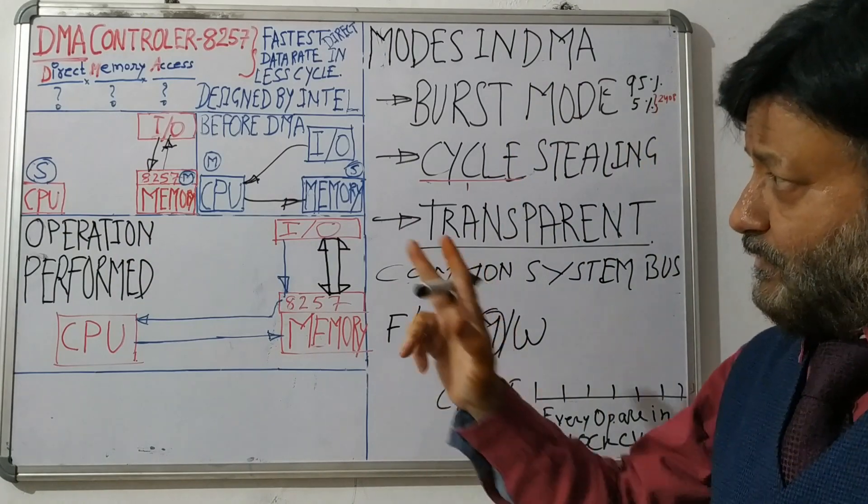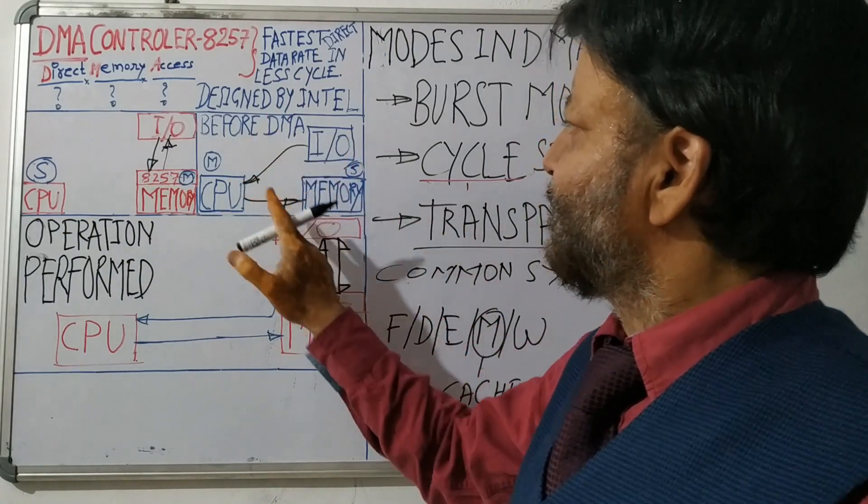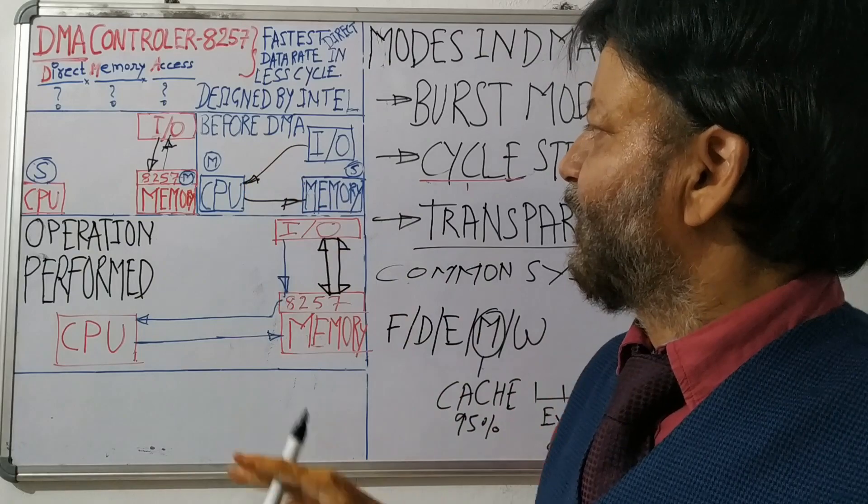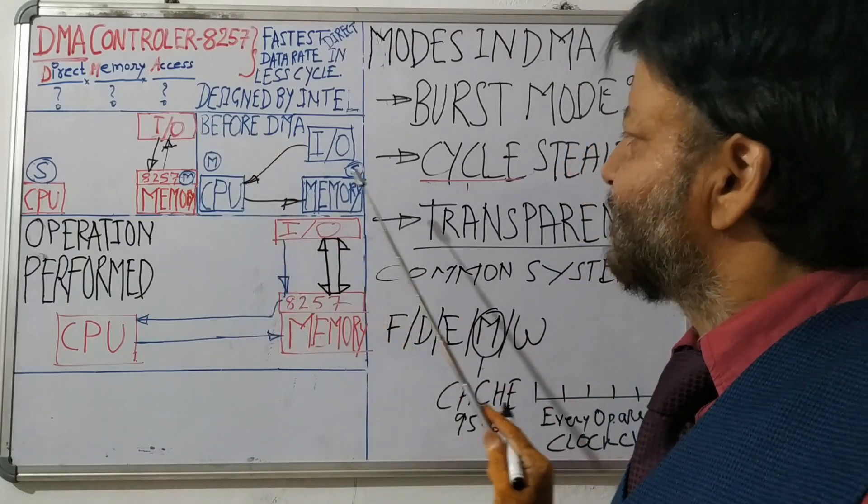So one more thing is there: CPU is master in that case, before DMA scenario. CPU is master and this is slave.